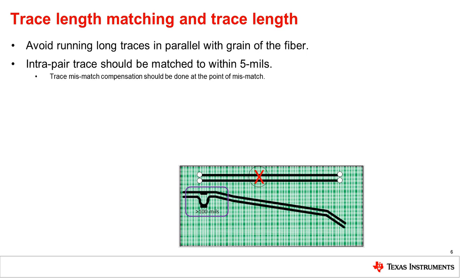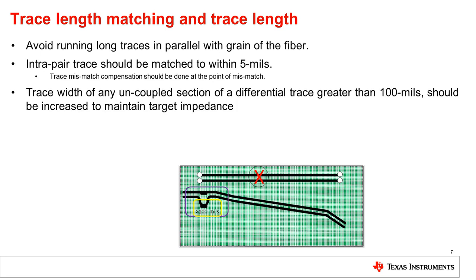If the signals in an example pair are running out of phase, they can magnetically affect each other through coupling. In some situations, it is desirable to run single ended or loosely coupled traces due to an intra pair length mismatch. If the length is greater than a quarter wavelength or 100 mils at PCIe Gen 4 speeds, then the trace width should be increased for the length of these loosely coupled traces.